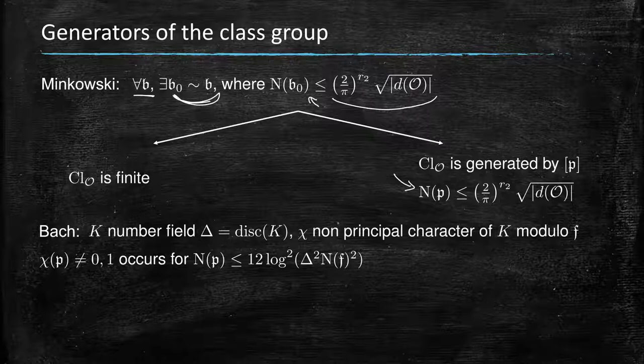...it's phrased in terms of characters, and we'll see in a second how this pertains to the norm of the primes that generate the class group, but it says that if you have a non-principal character, then that character has to be different and it has to have a non-trivial value for some prime...